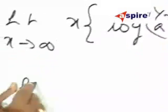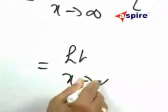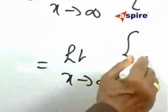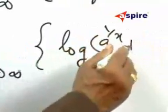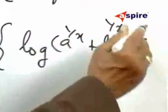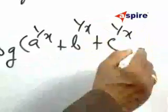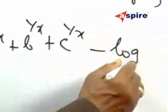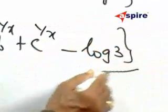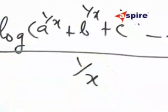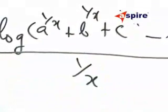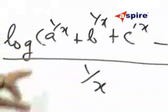This can be written as limit X tends to infinity: log of A to the power 1 by X plus B to the power 1 by X plus C to the power 1 by X minus log 3, divided by 1 by X. Because this is in the form 0 by 0, therefore L'Hôpital's rule can be applied.